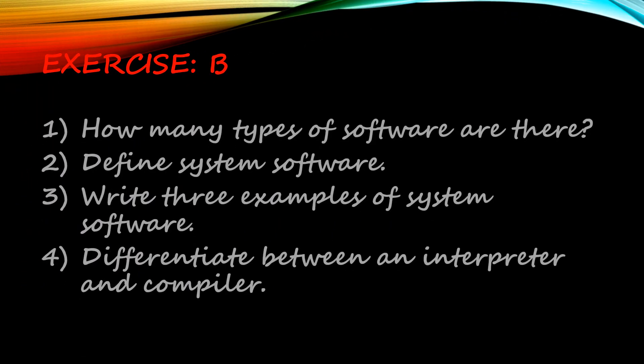Exercise B. First, how many types of software are there? Second, define system software. Third, write three examples of system software. Fourth, differentiate between an interpreter and a compiler.